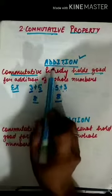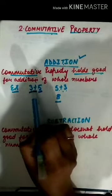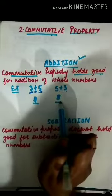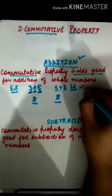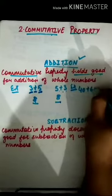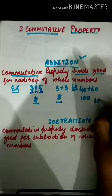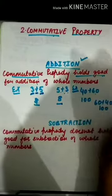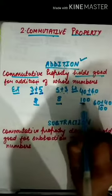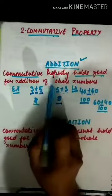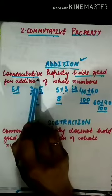Addition of whole numbers is commutative — the answer is not affected by changing the order. Let's confirm with another example: 40 plus 60 equals 100. Changing the order, 60 plus 40 also equals 100. Adding these two whole numbers in changed order does not affect the answer. So addition is commutative.